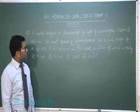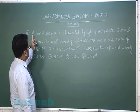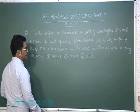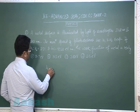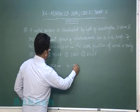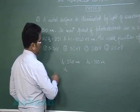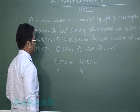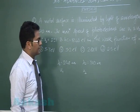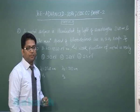Question number two is again from Modern Physics, from the photoelectric effect. A metal surface is illuminated by light of wavelengths lambda_1 = 248 nm and lambda_2 = 310 nm. The maximum speeds of the photoelectrons emitted are u1 and u2, and their ratio is given. For simplicity, the value of h is also given. We need to find the work function of the metal.